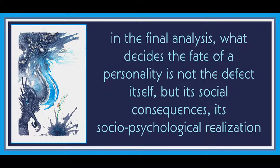A normal child's socialization is usually fused with the processes of his maturation. Both lines of development — natural and cultural — coincide and merge one into the other. Both series of changes converge, mutually penetrating each other to form, in essence, a single series of formative sociobiological influences on the personality. Insofar as physical development takes place in a social setting, it becomes a historically conditioned biological process. The development of speech in a child serves as a good example of the fusion of these two lines of development — the natural and the cultural. This fusion is not observed in a handicapped child; here the two lines of development usually diverge more or less sharply, and the physical handicap causes this divergence.